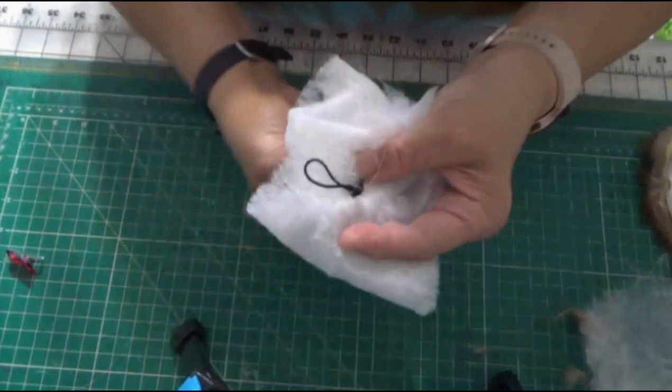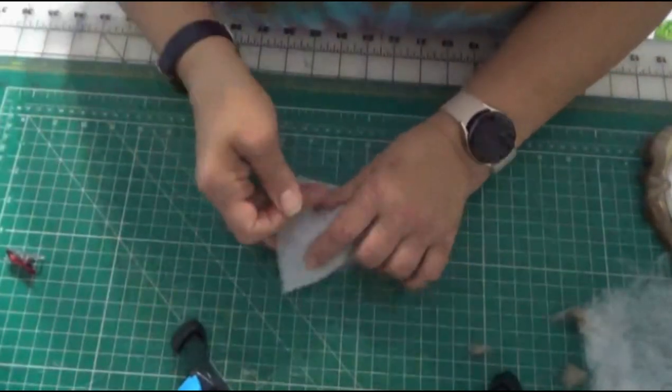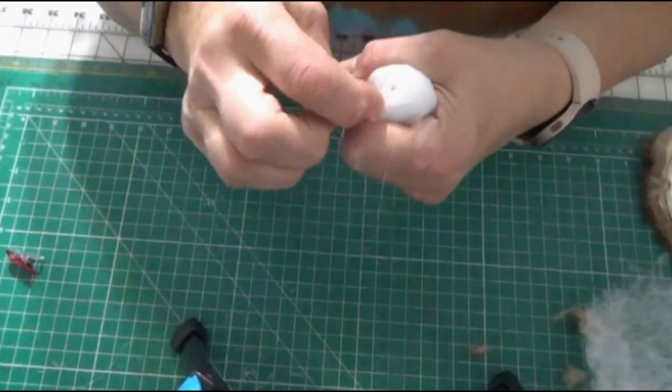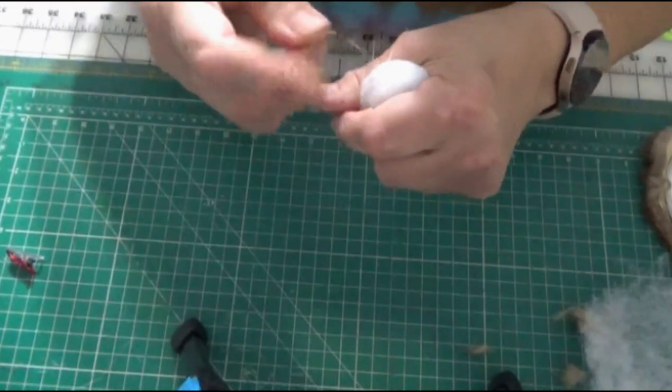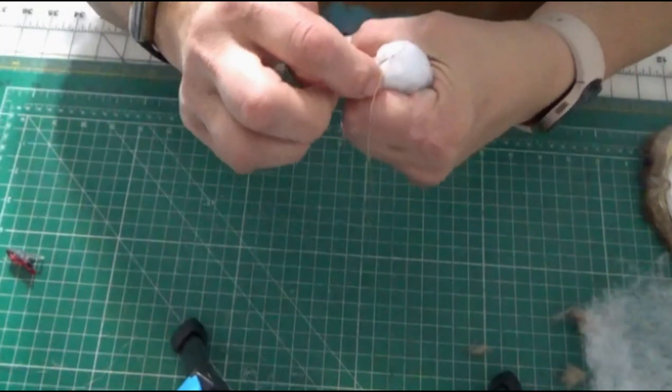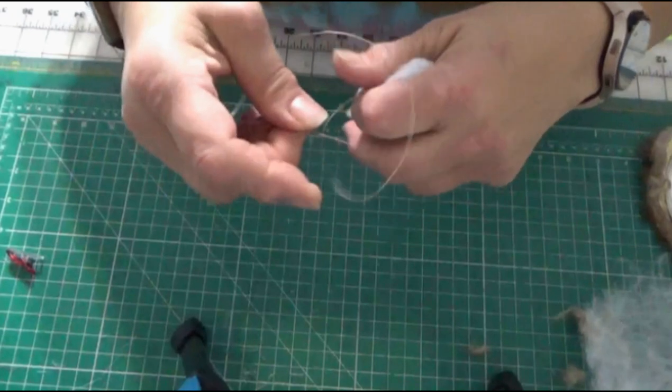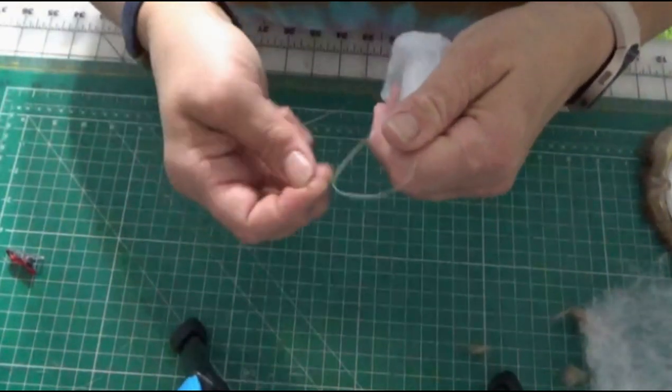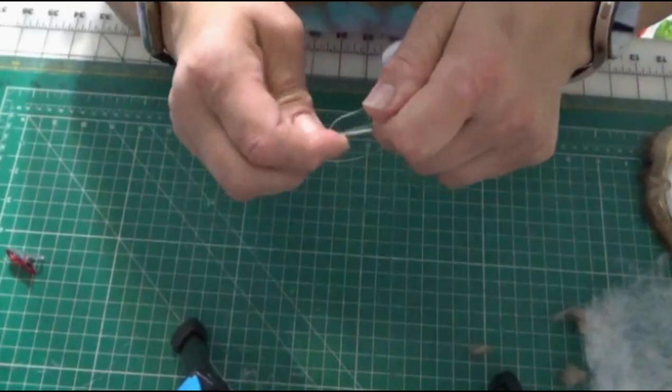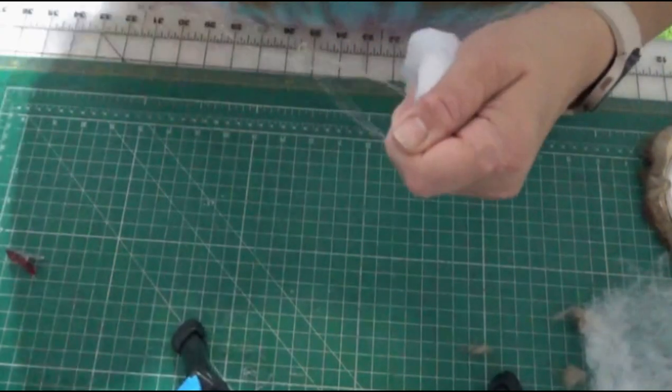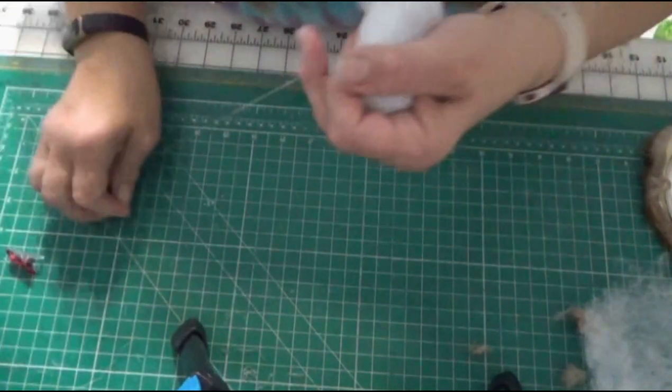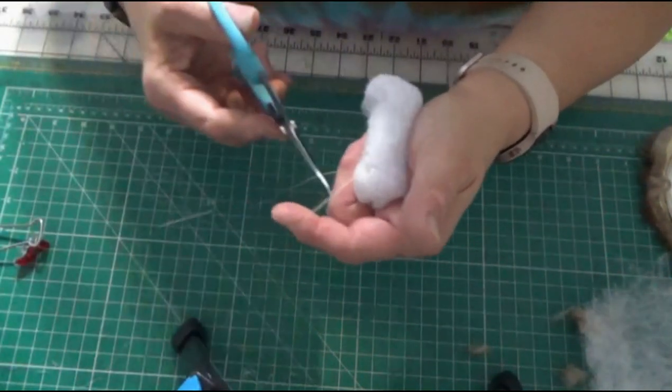Then I pull it through the back, come in, take a stitch. And I'm going to wrap the thread around three times: one, two, three. Pull it down and cut it.